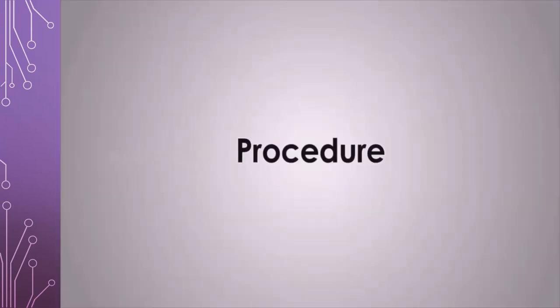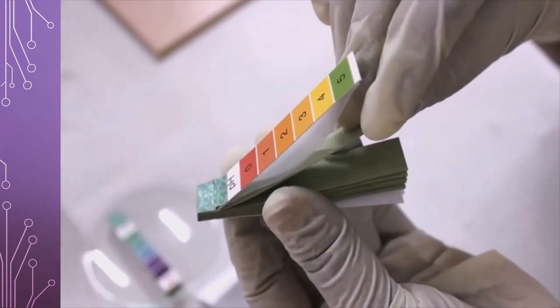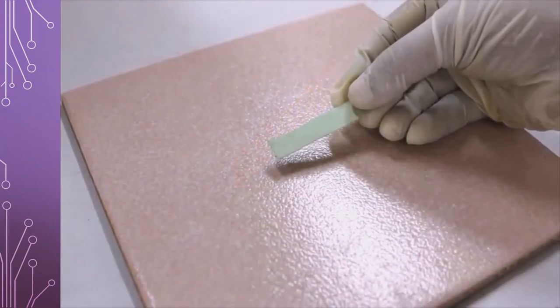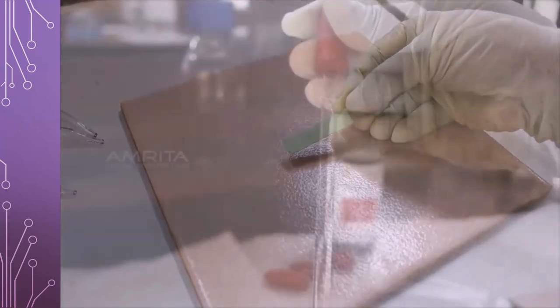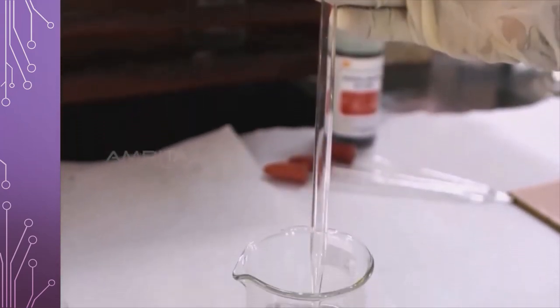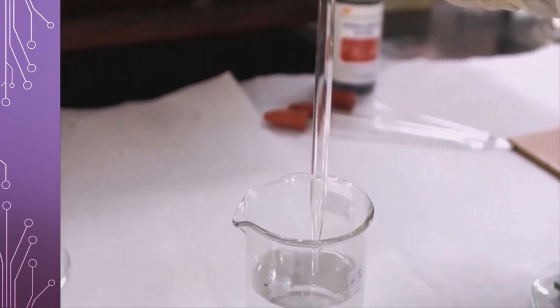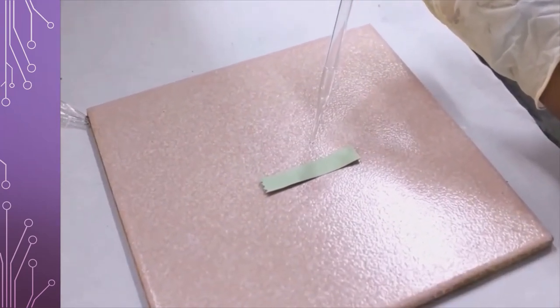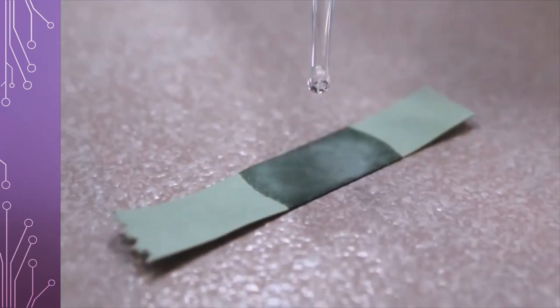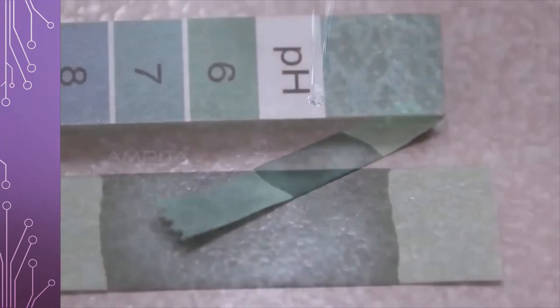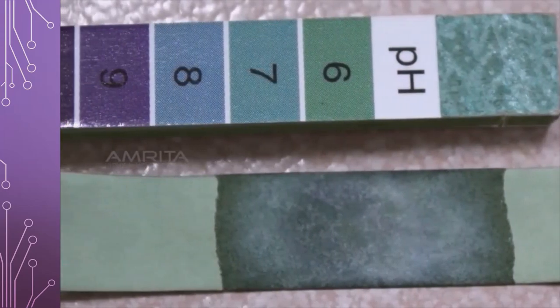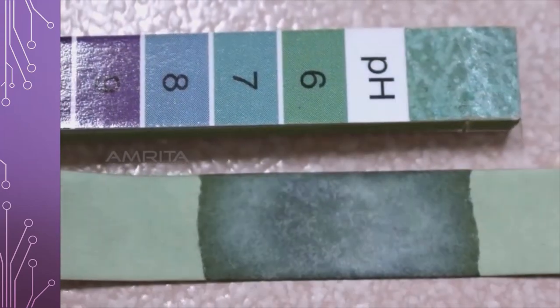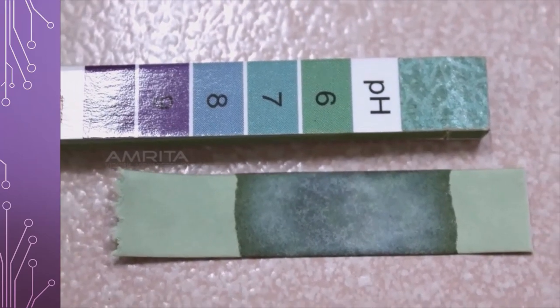Procedure: Take a strip of pH paper and place it on the tile. Take a drop of common salt solution from the beaker using a dropper and pour it over the pH paper on the tile. Now observe the color produced and compare it with the different color shades of the standard color pH chart, and note down the pH value.